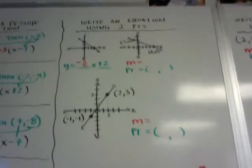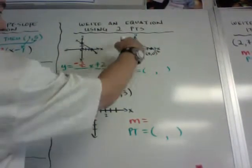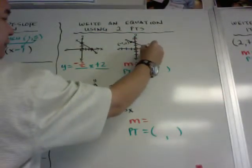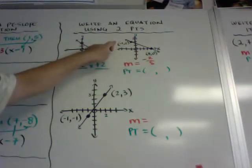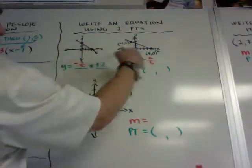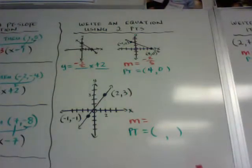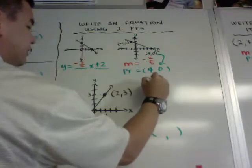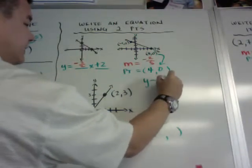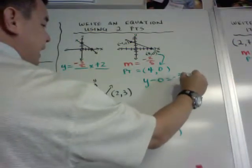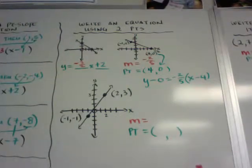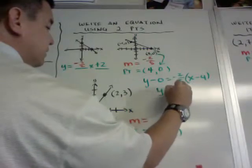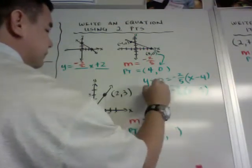Find your slope: it's down 2, over 5, giving negative 2 over 5. You can use either point — I'll use 4 comma 0. Write the equation as y minus 0 equals negative 2 fifths times the quantity x minus 4. Whenever you have a zero, you drop it off, so it simplifies to y equals negative 2 fifths times x minus 4. And that's how you do that one.